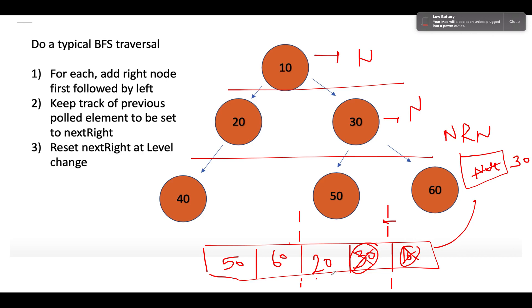Let's proceed ahead. Next element that we see happens to be 20. 20 gets pulled out. And 20's next right element will point to 30. So this gets updated like this. And this element is gone. We'll be adding its children into the queue. So 40 gets added. And along with this, since we are marking the completion of a particular level, therefore we'll be resetting the next right node back to null. So this gets updated to null.